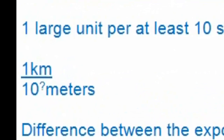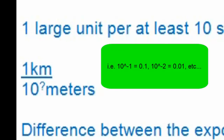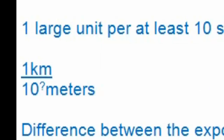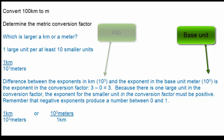Next, write a fraction with kilometer in the numerator and meter in the denominator, or meter in the numerator and kilometer in the denominator. However you choose to start, put the number one in front of the larger unit — in this case, one kilometer. The number in front of meter needs to be 10 raised to some power, because we need at least 10 small units to make up the one larger unit. The exponent is determined by taking the difference between the exponents of the base unit and kilo.